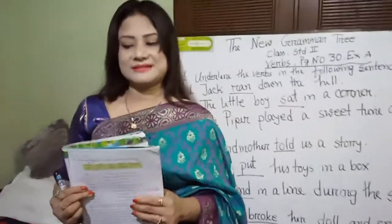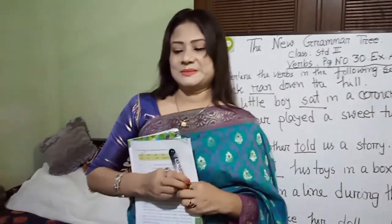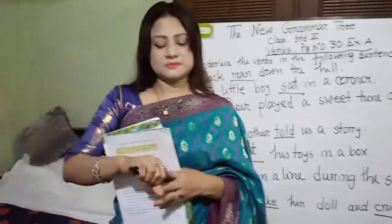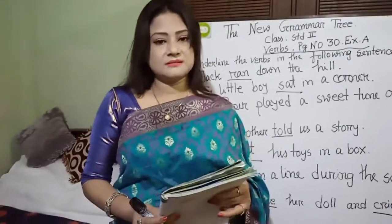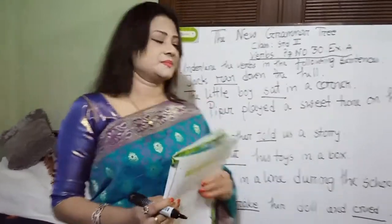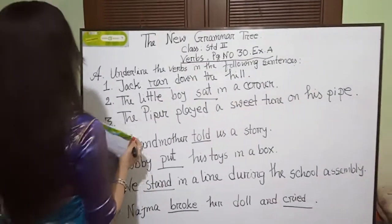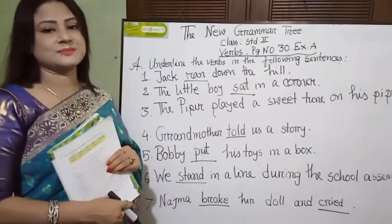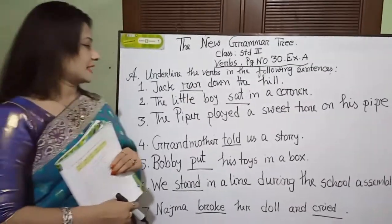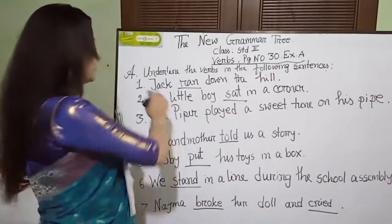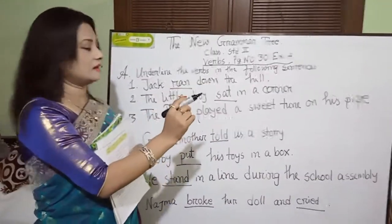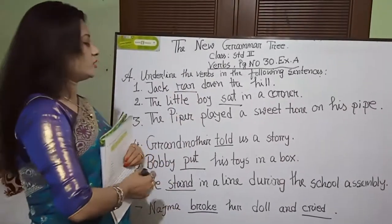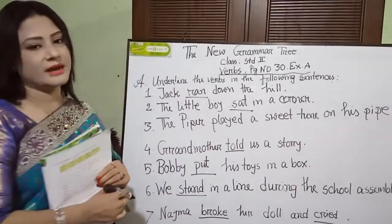Okay dear students, come to the whiteboard. Test number 30, Exercise A. Underline the verbs in the following sentences. Number 1: Jack ran down the hill. Here, 'ran' is an action word or doing word. So, 'ran' is a verb.